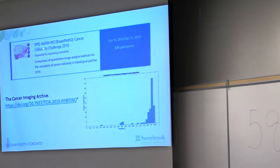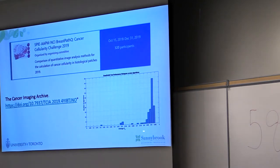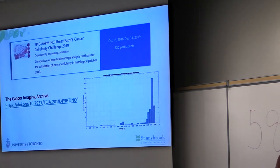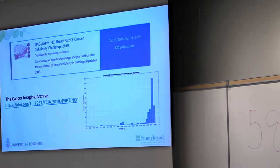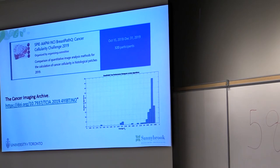We ran a challenge in 2019 where we released these patches publicly. It was a patch-based challenge and participants did very well — neural networks handled it quite well. Interestingly, the winners didn't know anything about pathology, which is a bit scary. However, the one who came first had gone out to talk to a pathologist, which helped refine his score. Those who actually had pathologists helping them tidy up the edges did better. So domain knowledge still works in this field.